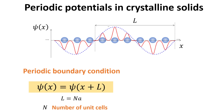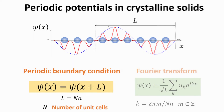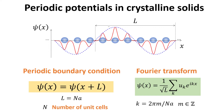Thus, the periodic boundary condition for the wave function reads: where n is the total number of unit cells within the large space region L. Similar to the periodic potential case, the wave function can also be Fourier transformed to momentum space due to the real-space periodicity. The Fourier transform of the wave function is shown in the green box, where the set of momenta K are related to the spatial extent of the region L over a large number of unit cells N.